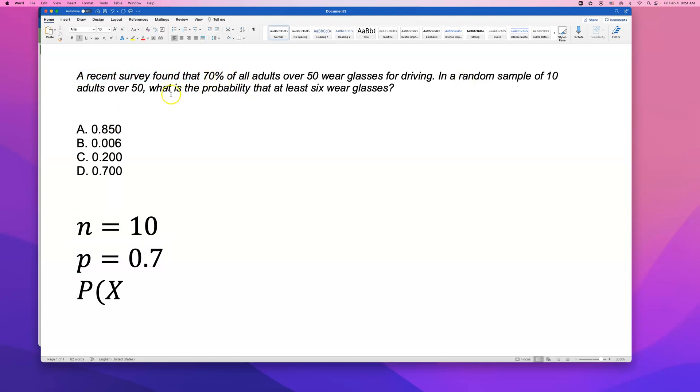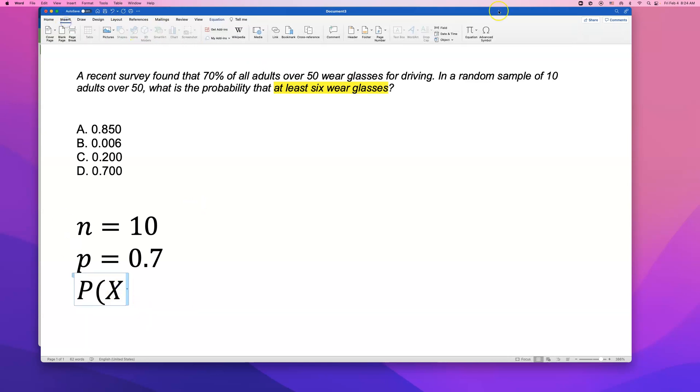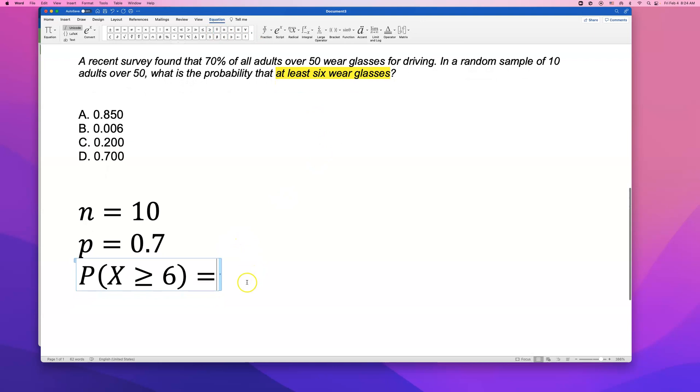Now what do they want? They want what is the probability that at least 6 wear glasses. At least 6. That is probability that the number of people who wear glasses comes out to be 6, 7, 8, 9 or 10. So X is greater than or equal to 6.